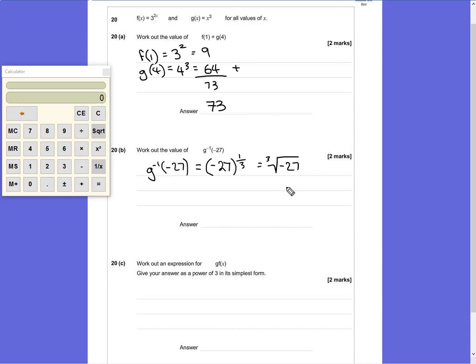While this alone may be a suitable enough answer left in surd form, you can actually solve this because the cube root of 27 is 3. 3 times 3 is 9, times 3 is 27, and because this is negative, the answer would be -3.